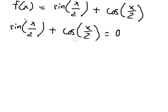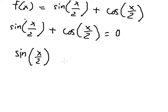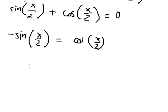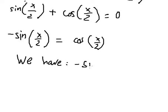I will move this term to the right. And we have sine of S over 2 equals to negative cosine of S over 2. So I will put the negative sign to the left. We have the formula: negative sine of capital A equals to sine of negative A.